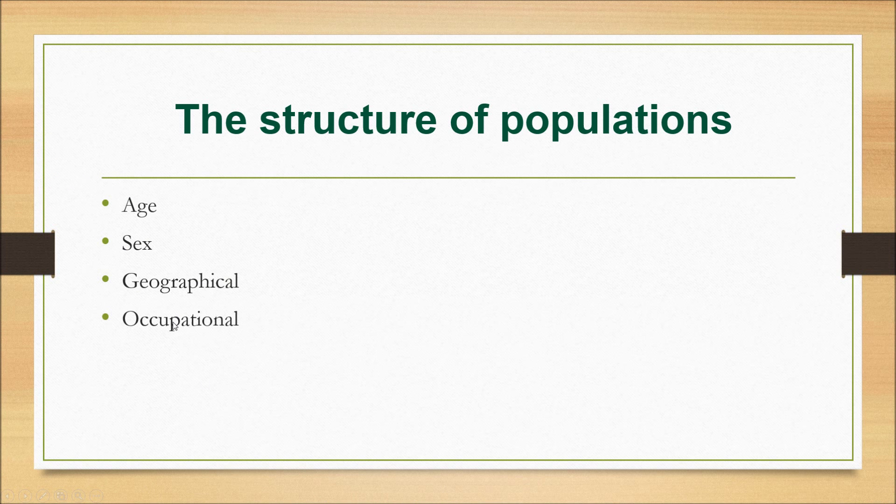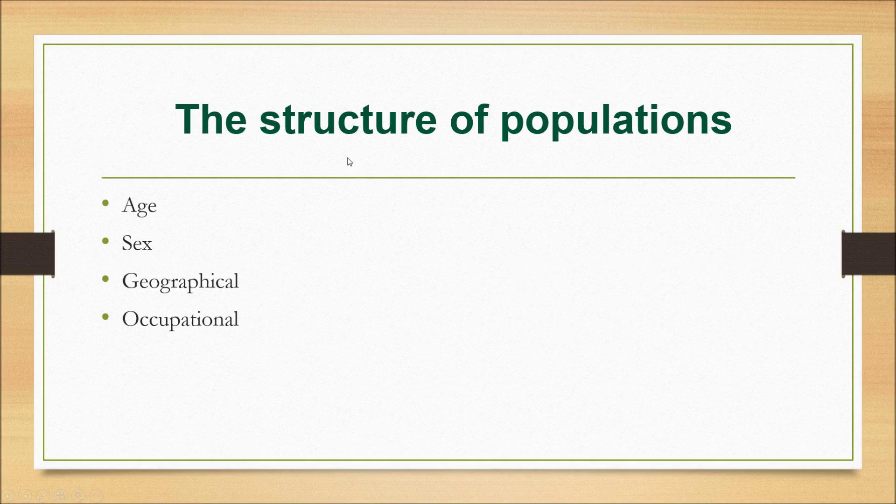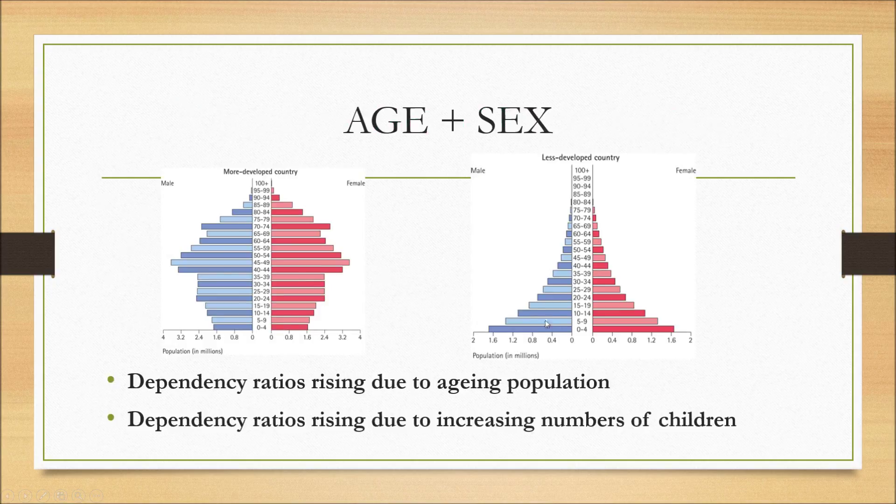Next, the last part is the structure of populations and there are four different ones. There's the age population, sex population, geographical population, and occupational population. And age and sex, they're closely linked to each other. Like for example here, in a more developed countries, the dependency ratio are rising due to aging population. As you can see right here, people might not be able to work or willing and able to work at 65 or above and there's quite a lot of population here. So there's an increase in aging population and dependency ratios.